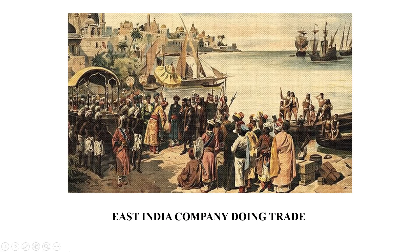but it still saw itself primarily as a trader. It wanted a large revenue income, but was unwilling to set up any regular system of assessment and collection. The effort was to increase the revenue as much as it could and buy fine cotton and silk cloth as cheaply as possible. Within five years, the value of goods bought by the company in Bengal doubled. Before 1765, the company had purchased goods in India by importing gold and silver from abroad. Now the revenue collected in Bengal could finance the purchase of goods for export. But soon it was clear that the Bengal economy was facing a deep crisis.